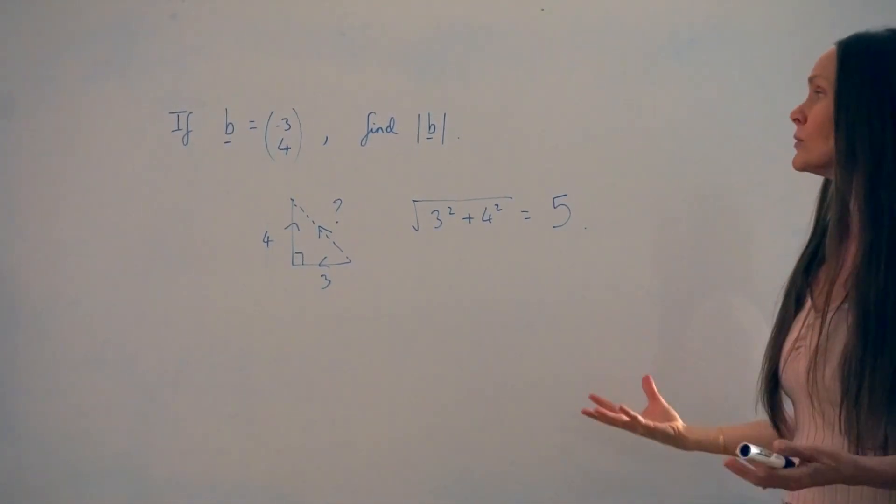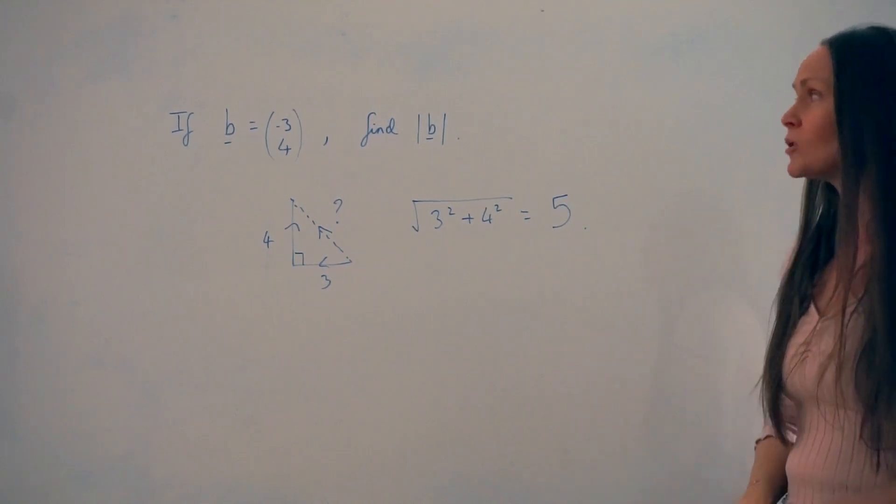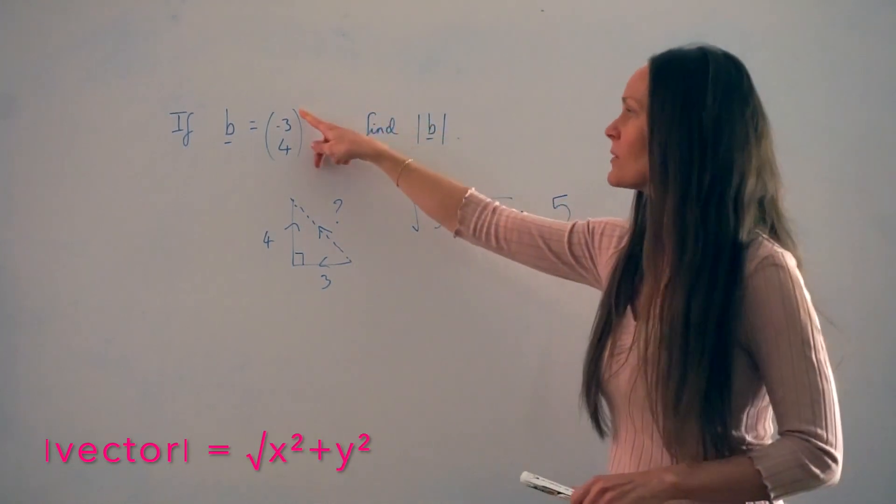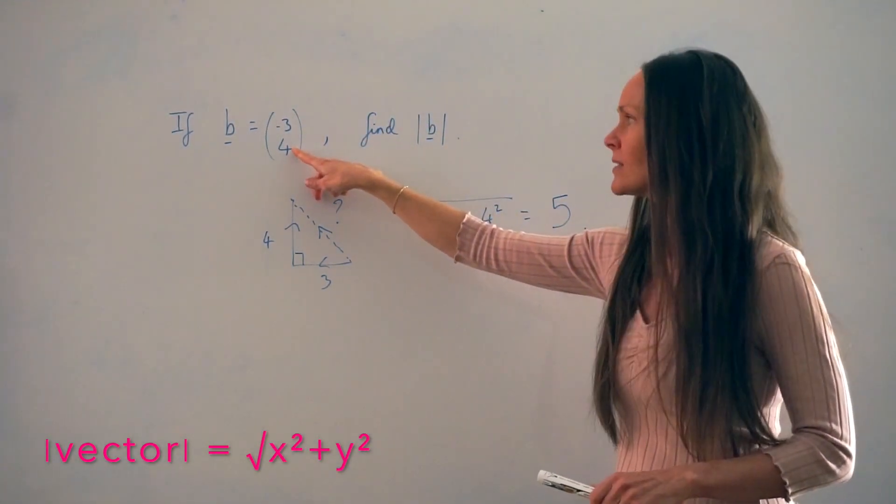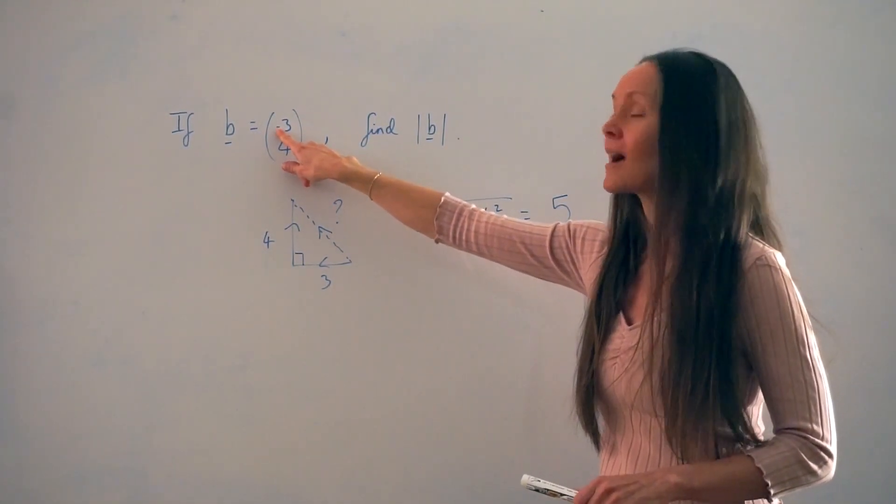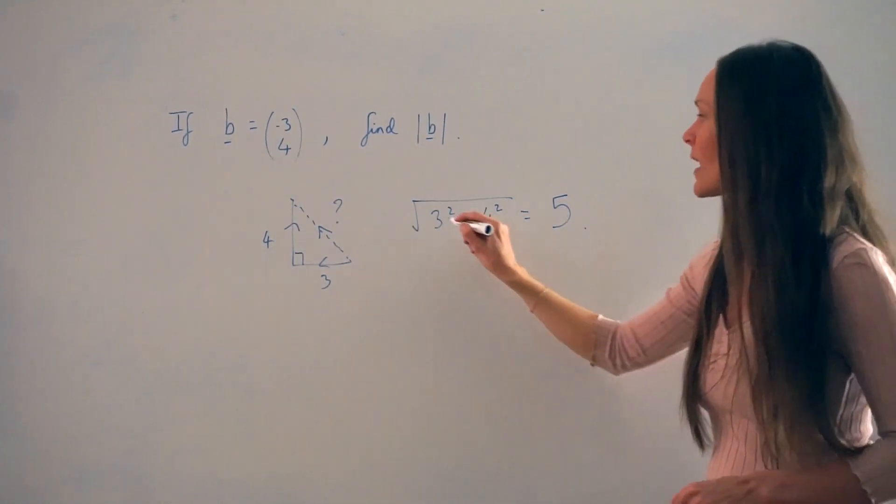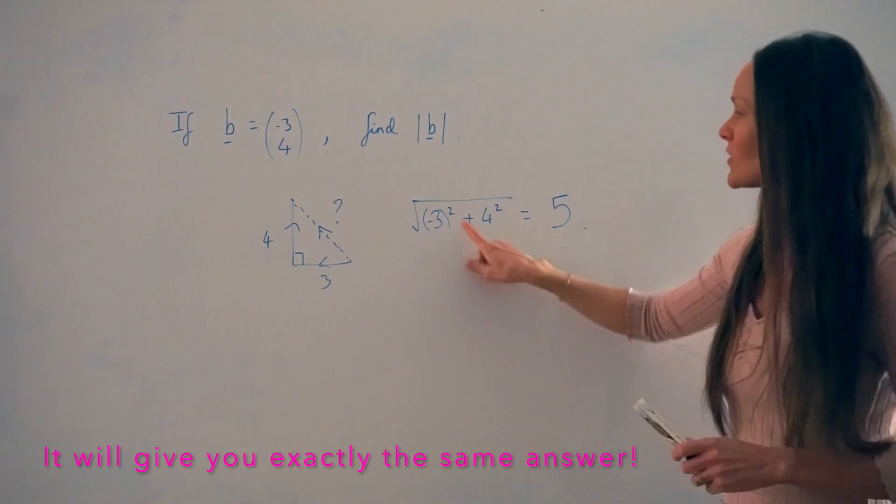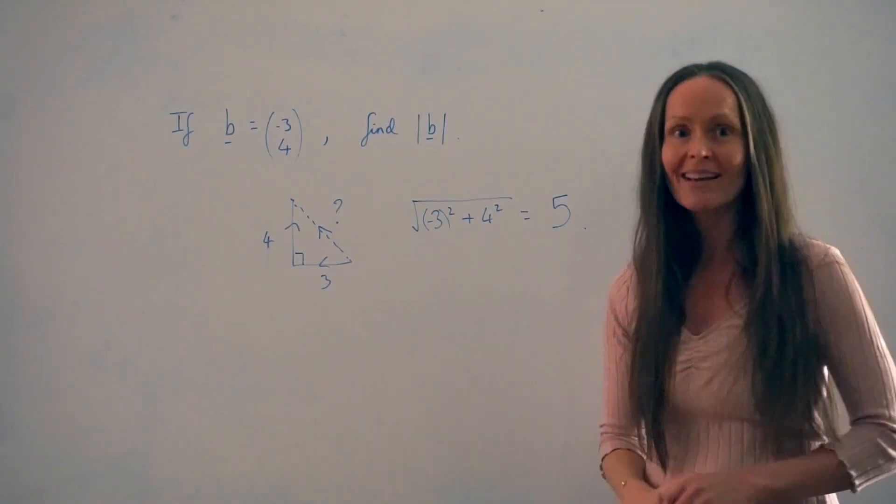Now, as a general rule, to work out the modulus of any vector like this, you just square root this number squared plus this number squared. So if you take into account this negative 3, that is okay, but just make sure you pop it in brackets, and the squared is outside when you're working out the length.